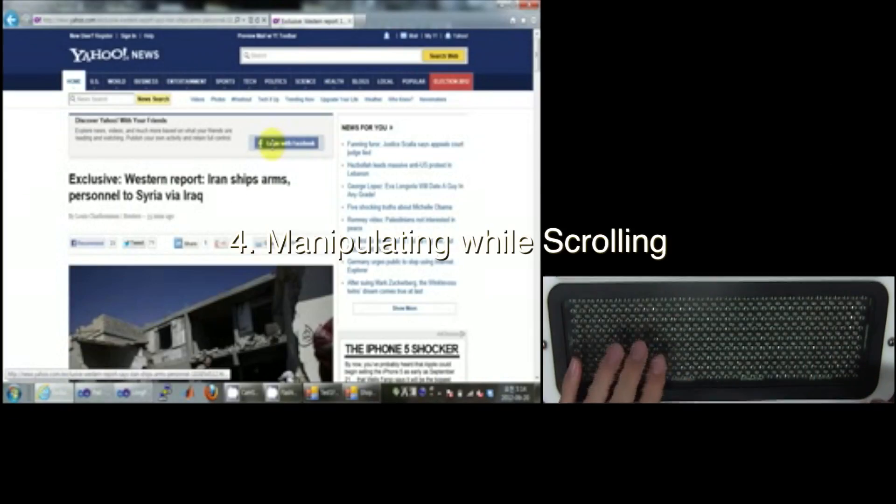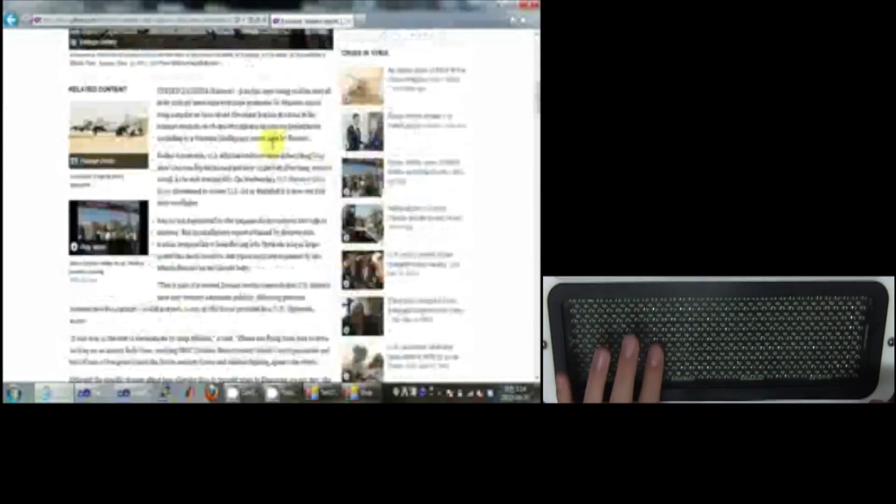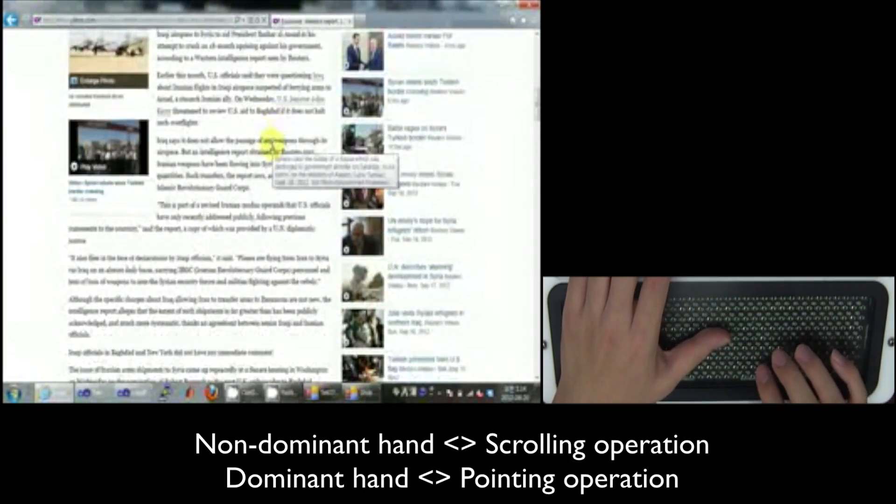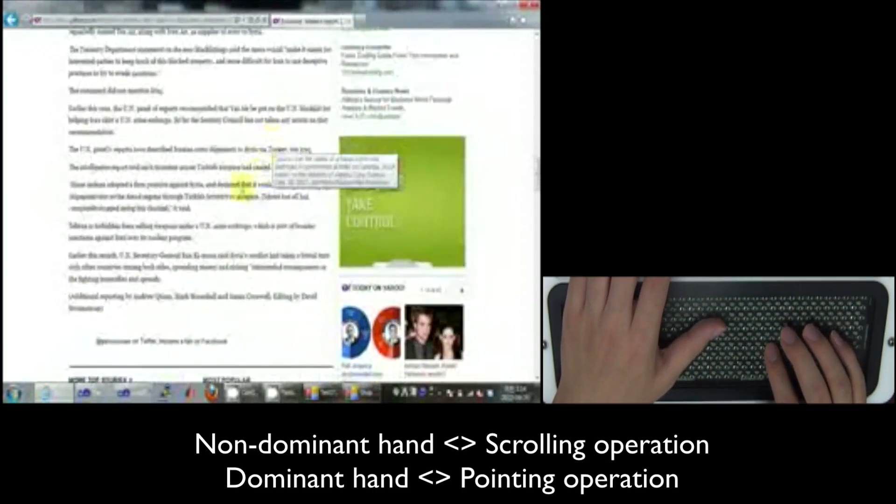In manipulating while scrolling, the movement of a finger on non-dominant hand is mapped onto the scrolling operation, while the movement of a finger on dominant hand is mapped onto the pointing operation.